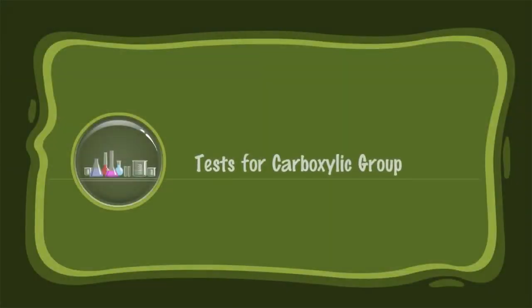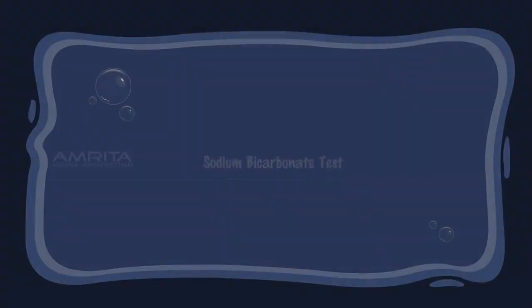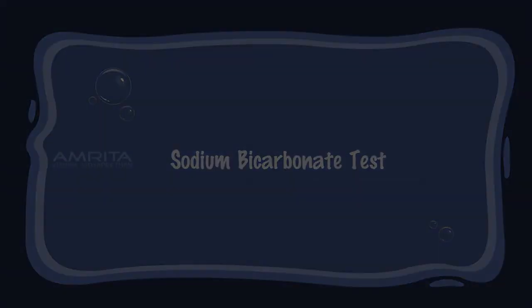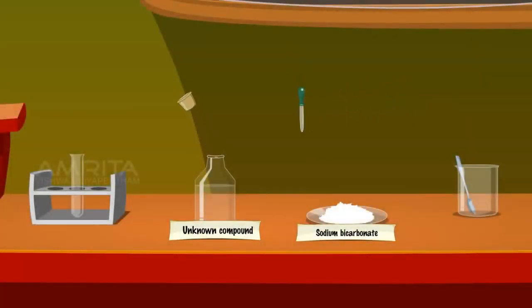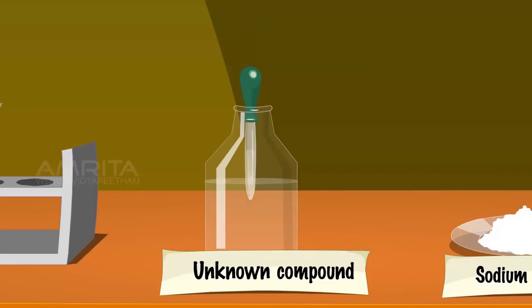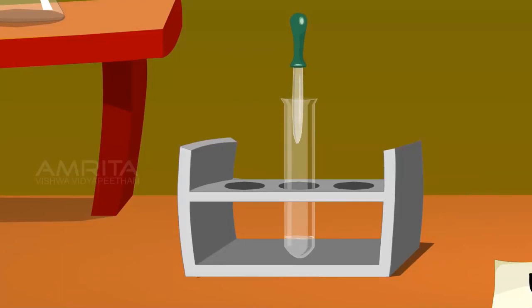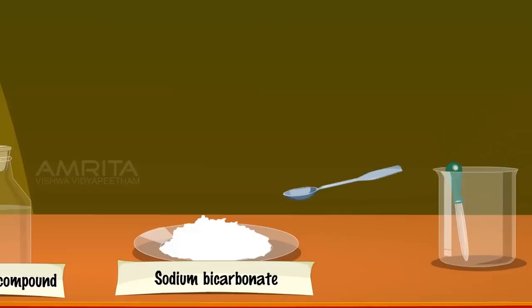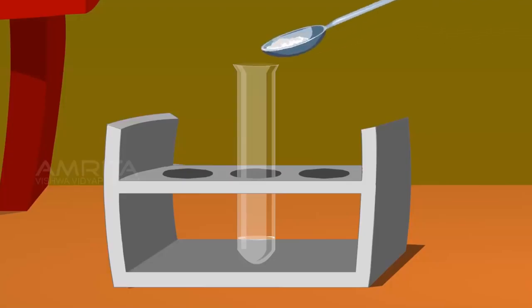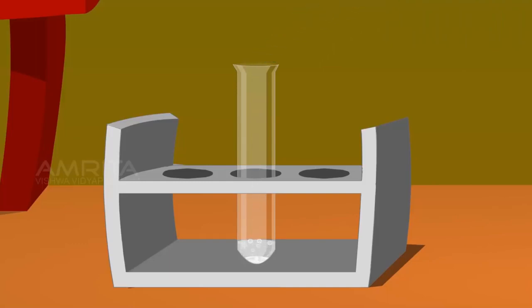Test for carboxylic group — Sodium bicarbonate test. Procedure: Take a dropper and take a few drops of unknown solution, add it into the test tube. Take a small quantity of sodium bicarbonate using a spatula and add it into the test tube. Carboxylic acid reacts with sodium bicarbonate to produce brisk effervescence due to the formation of carbon dioxide gas.